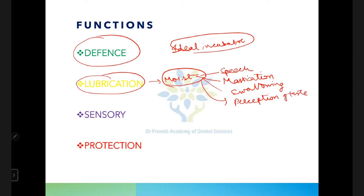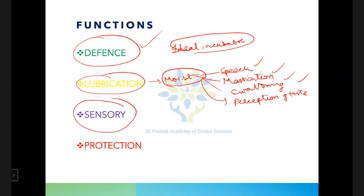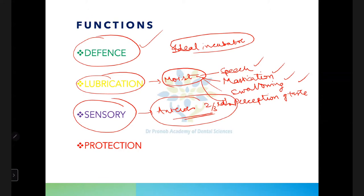The sensory function of the oral mucosa is largely due to taste buds. Sensation is better appreciated in the anterior two-thirds of the tongue. The oral mucosa is sensitive to touch, pressure, pain, and temperature, and the sensation of taste is mainly perceived in the anterior two-thirds of the tongue.